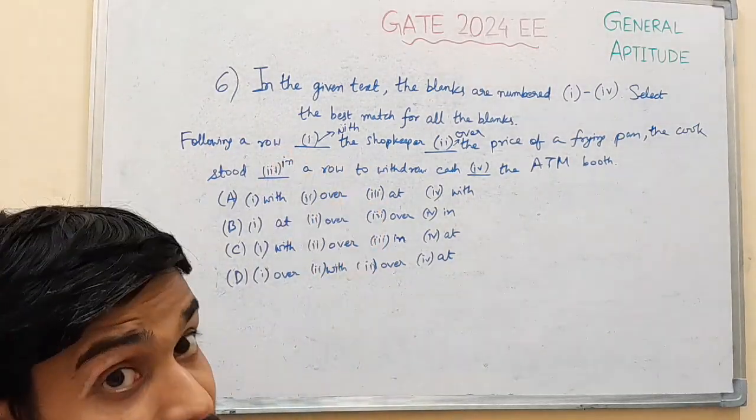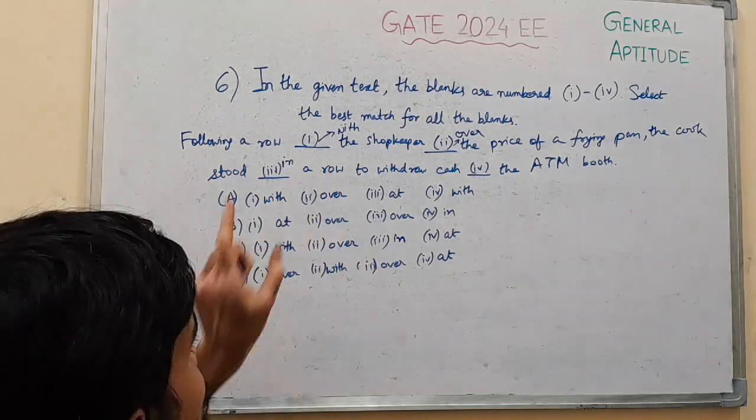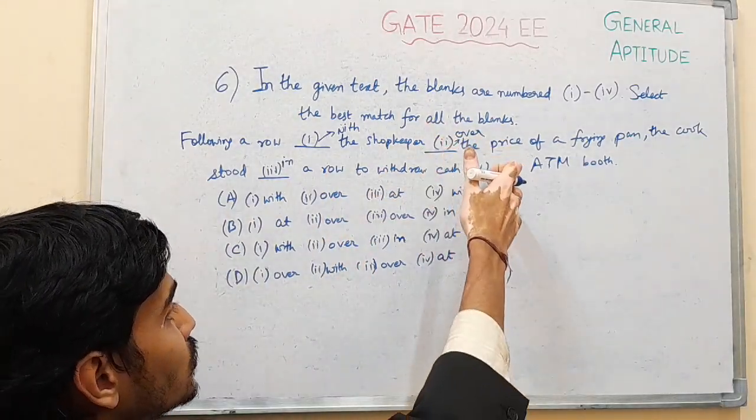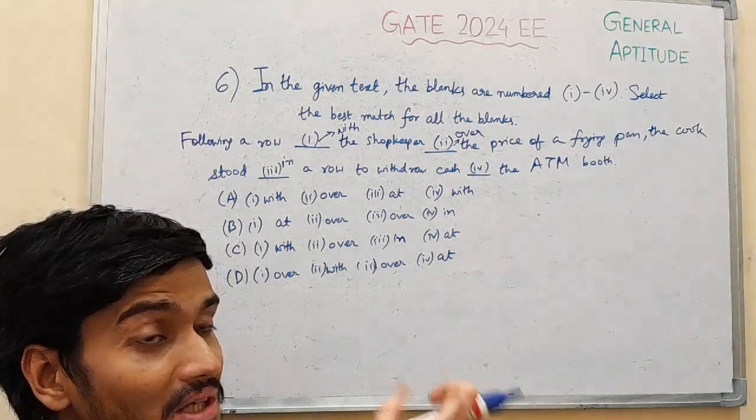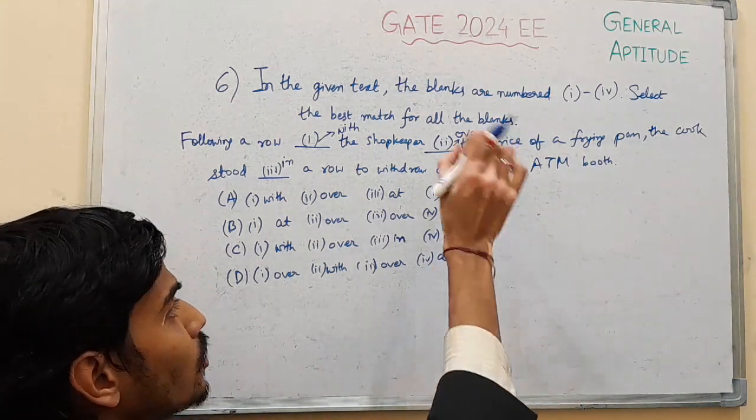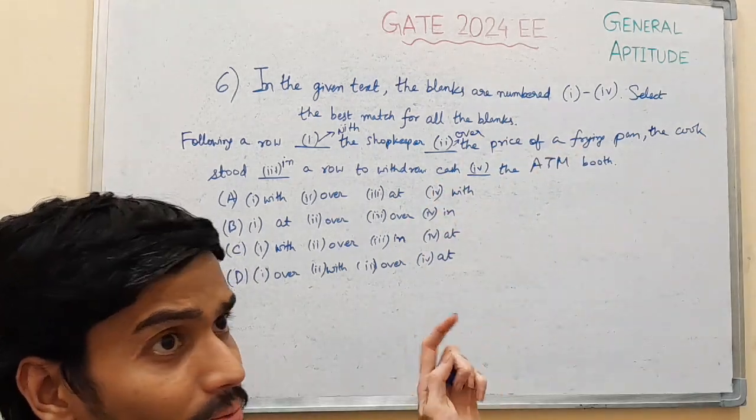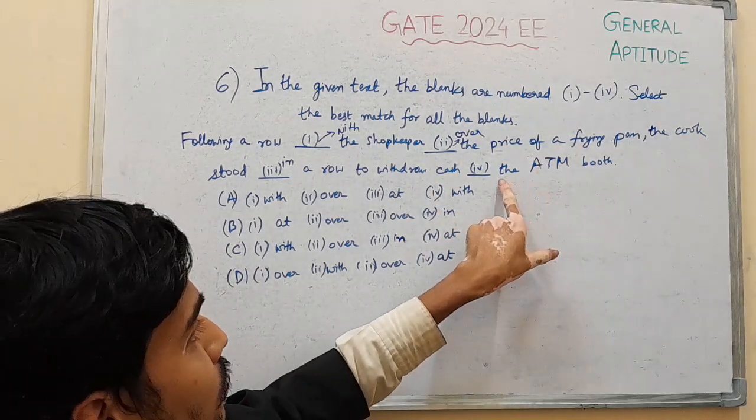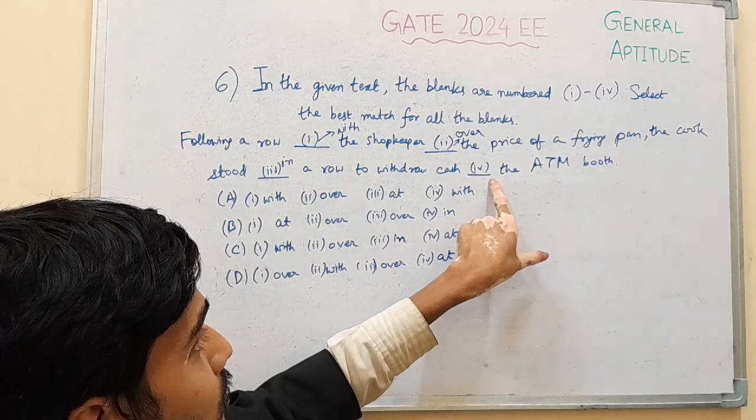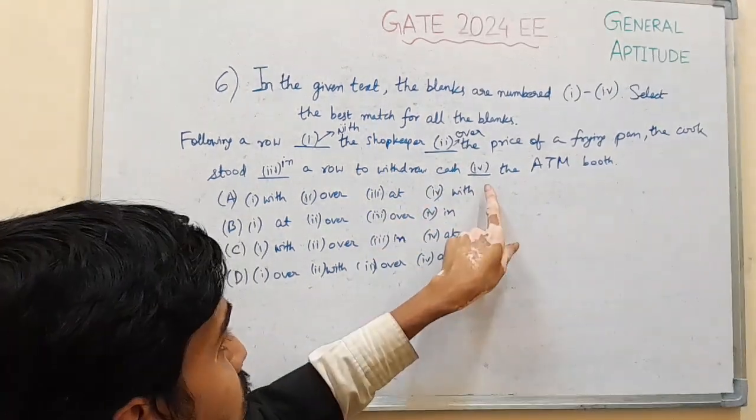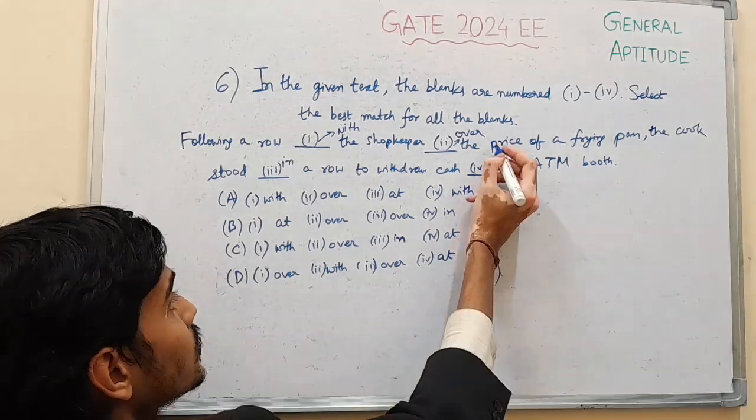First row means argument, second row means line or queue. So withdraw cash where, place. When you denote place it will be in, at, something like this. So ATM booth is a small place, not a very big place. So to denote location with respect to a small place, we usually use the preposition at, so this will be at.